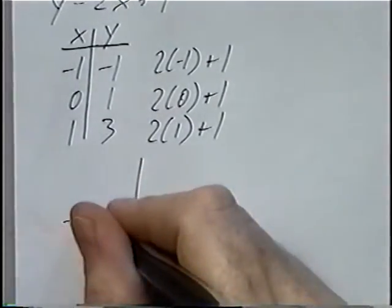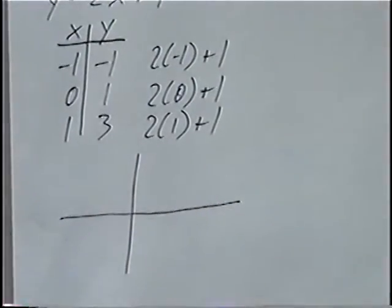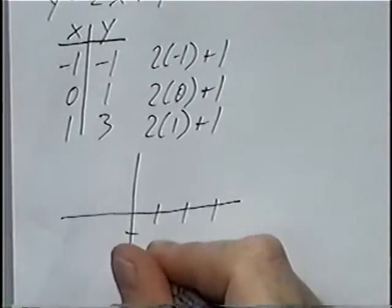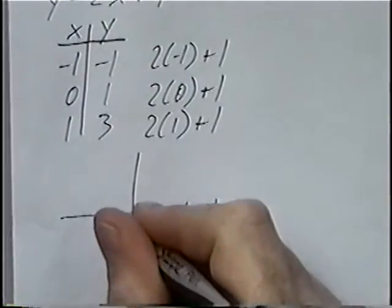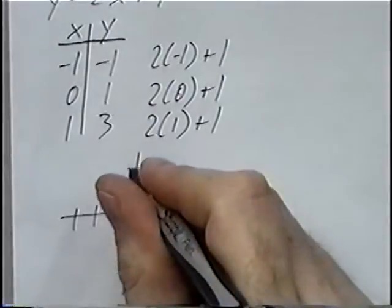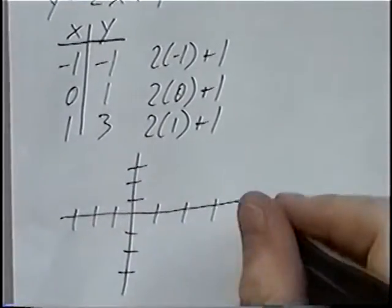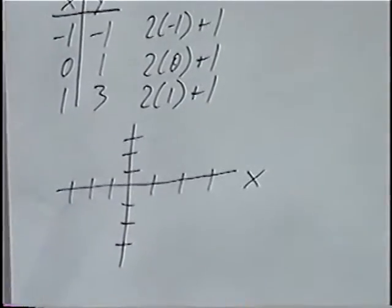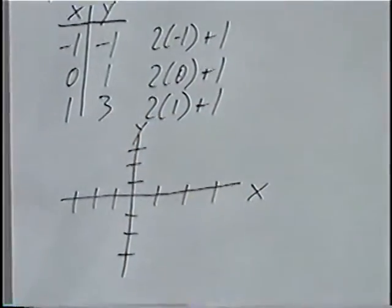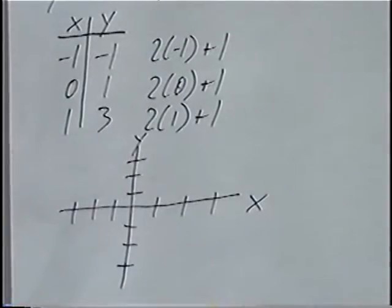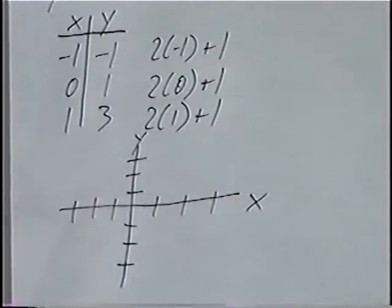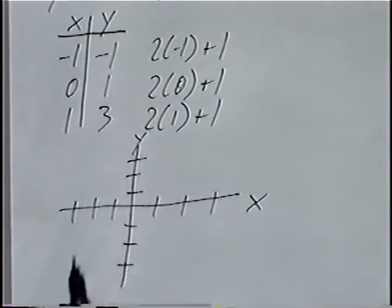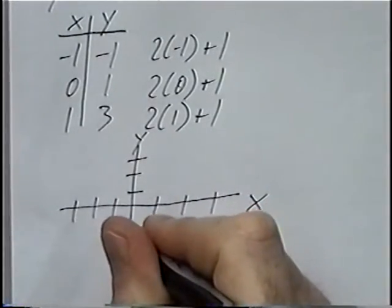The biggest number we have is three, so we can go three spots in each direction. You can label the graph — x is the axis that goes left or right, or horizontal, and y is the axis that goes up and down. Graphing the first point, negative one, negative one: x goes one spot to the left, and y goes one spot down.